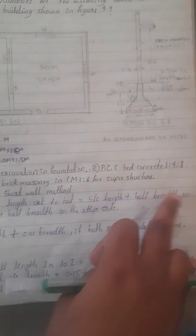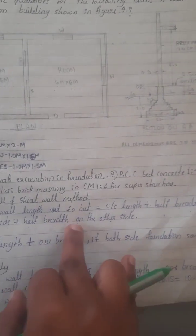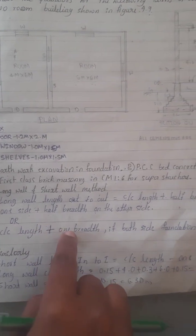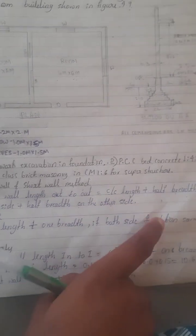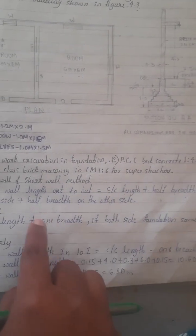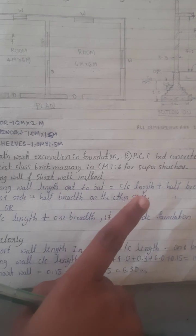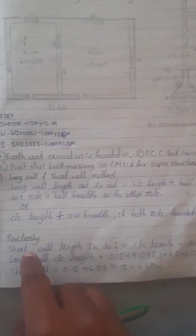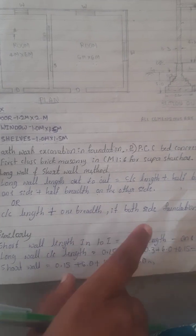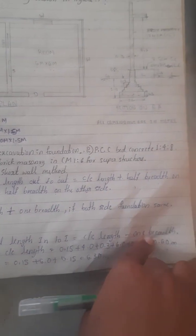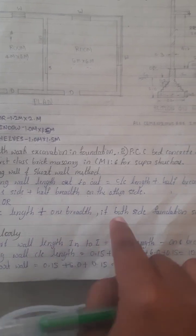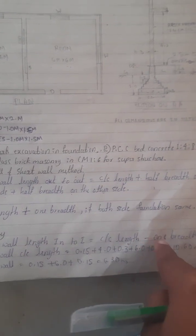Center to center length: one side half of breadth, and the other side half of breadth. So the center length plus one breadth. If both side foundations are the same, then the long wall length equals the center length plus one breadth.